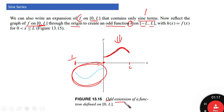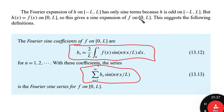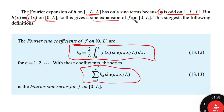This is what we call the odd extension of a function defined from 0 to L. We are checking that it can be mirrored through the origin. If so, this means we can expand it using sine terms only. The Fourier expansion of this function h on minus L to L has only sine terms because h is odd on the whole interval from minus L to L. But h(x) equals f(x) on 0 to L, so this gives a sine expansion of f on the interval 0 to L. This suggests the following definition.